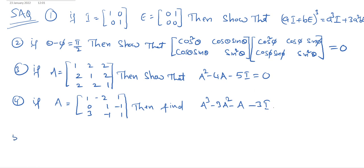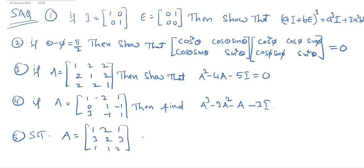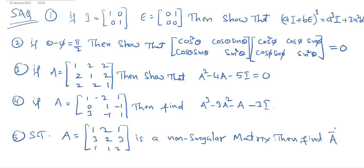Fifth question: show that capital A = [1, 2, 1; 3, 2, 3; 1, 1, 2] is a non-singular matrix, then find A inverse.